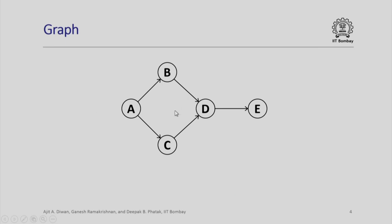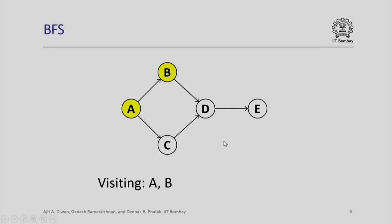Let us look at a demonstration. Here is the same graph that we have seen earlier with 5 nodes. We start with A. The breadth first search will be A, followed by B, followed by C, followed by D, followed by E. We shall see how things are popped out and pushed in as we look at the formation of the list.